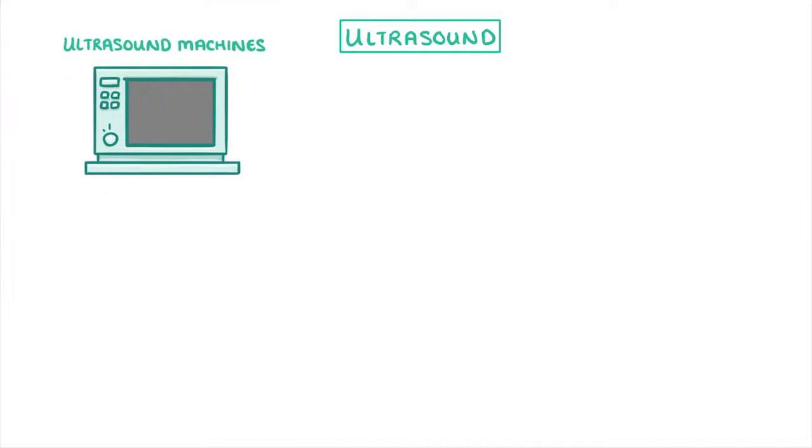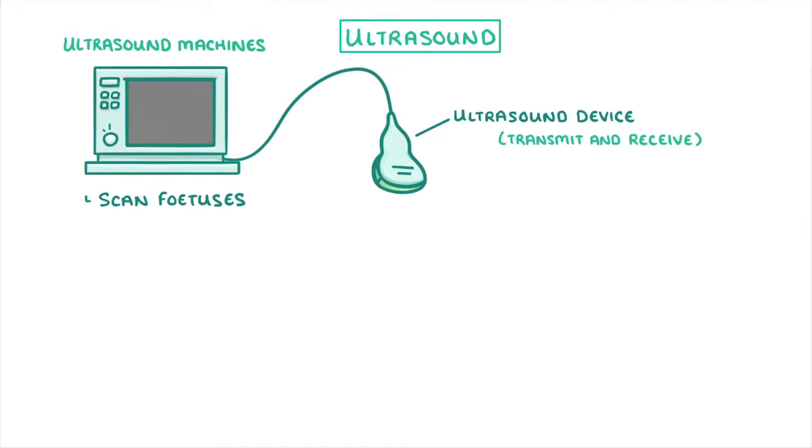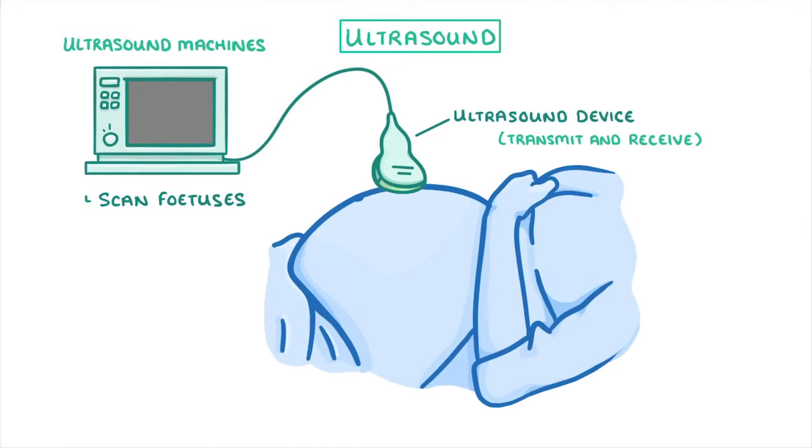The best known example of using this technique is probably in the ultrasound machines that are used to scan fetuses. This works by placing an ultrasound device, which can transmit and receive the ultrasound waves, onto a pregnant woman's belly, and firing ultrasound waves towards the fetus.